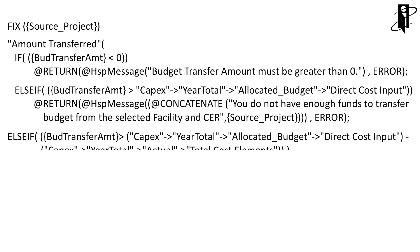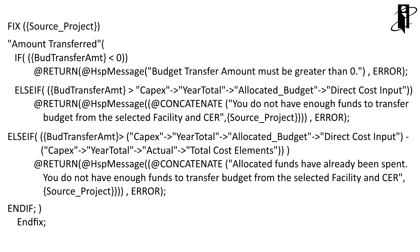What this looks like using the @RETURN function is we have our FIX statement — there's some other surrounding logic, but this is the basic logic. We fix on our source project, then do our first logical condition: if the budget transfer amount that the end user is entering in their runtime prompt is less than zero, we want to return the message 'Budget transfer amount must be greater than zero.'